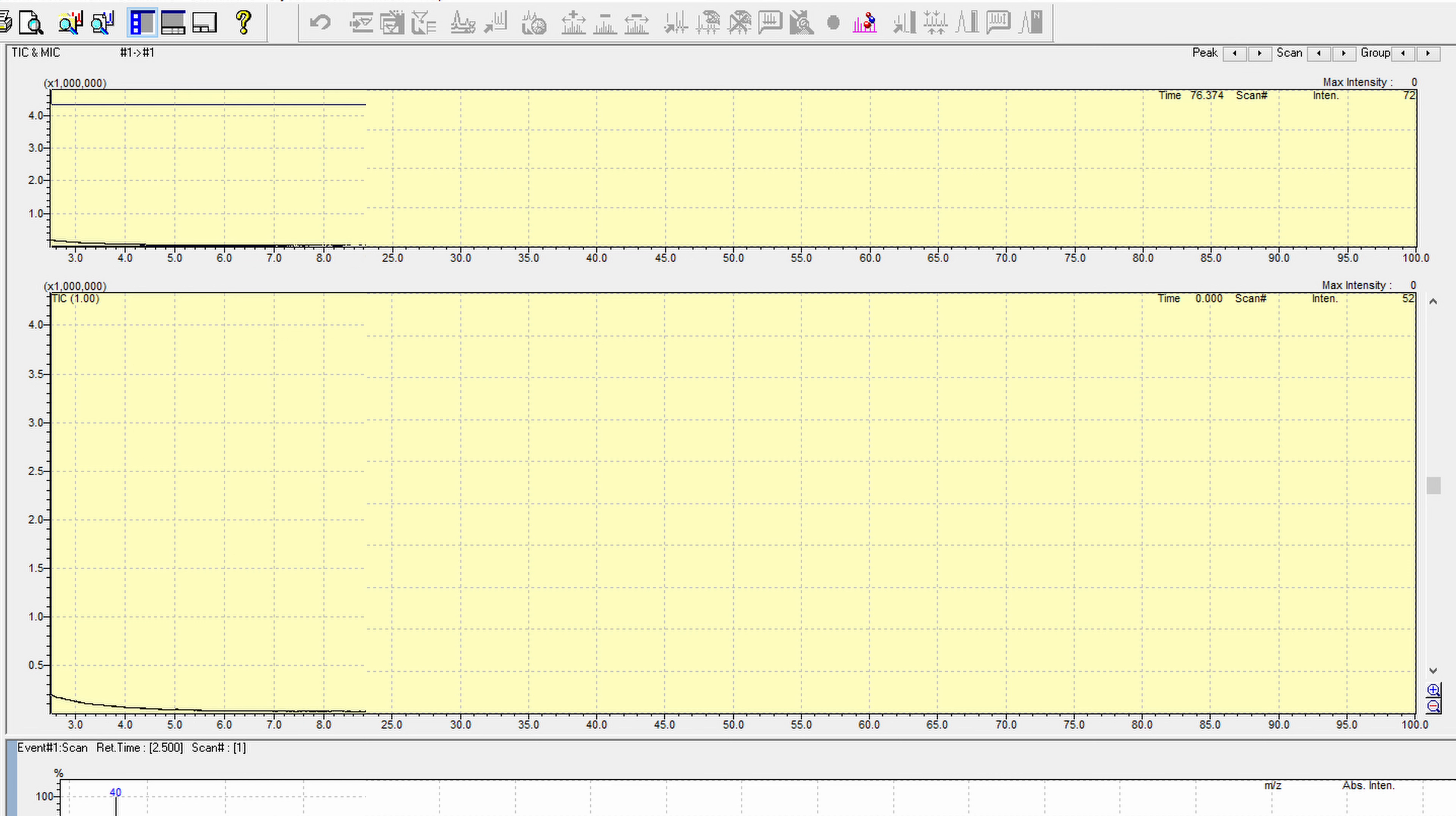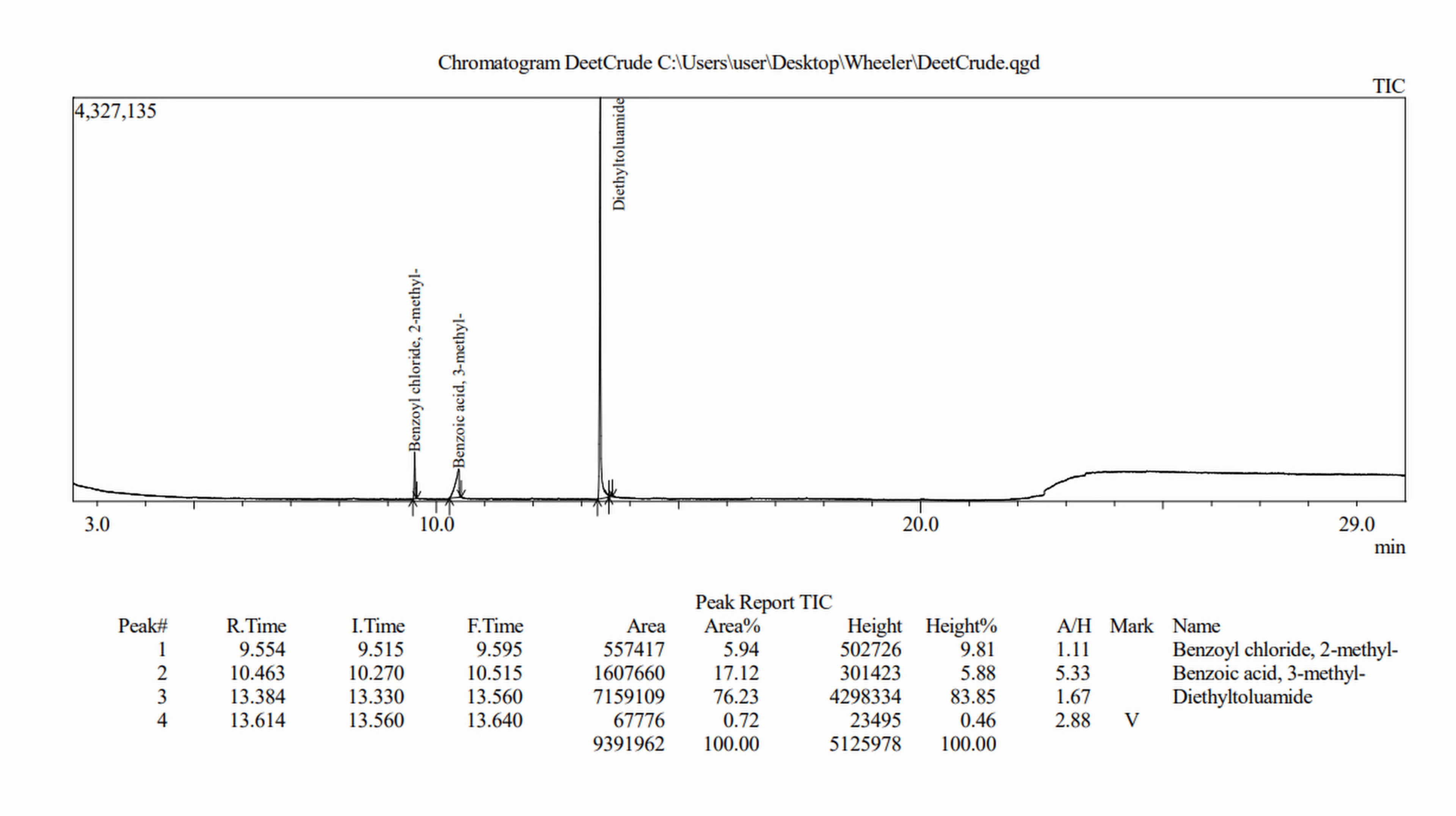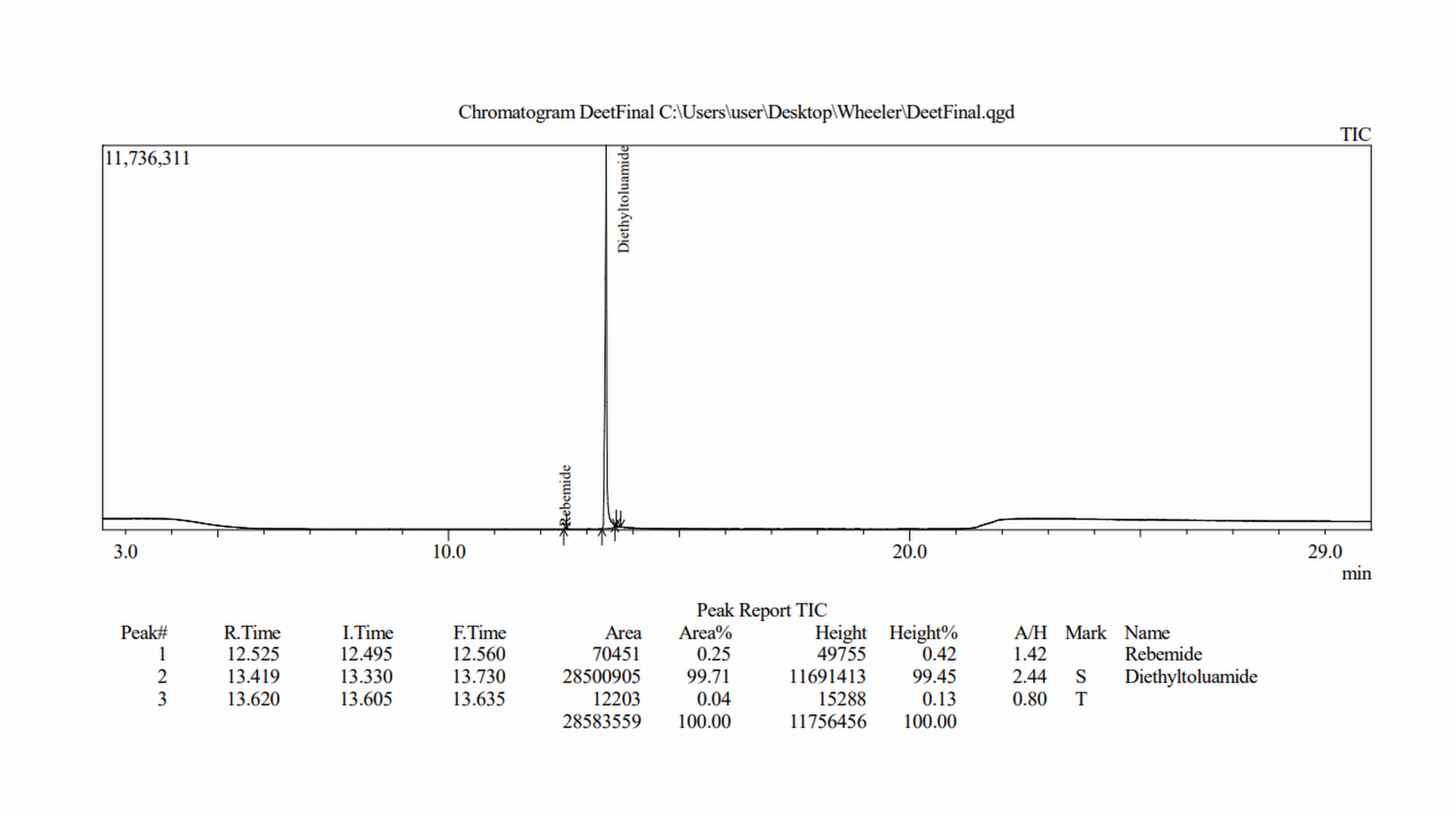In our starting crude compound, we have three compounds: 2-methylbenzoyl chloride, 3-methylbenzoic acid, and our desired product, DEET. Comparing that to our sample of purified compound, we have two in our sample: an amide and our DEET compound.